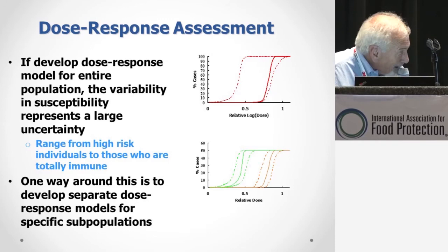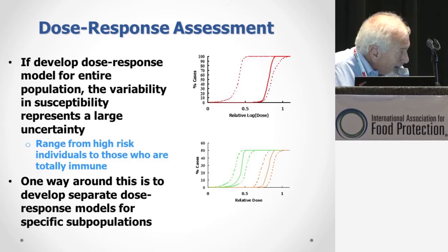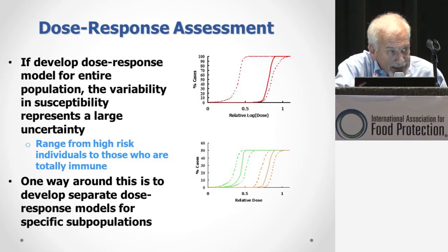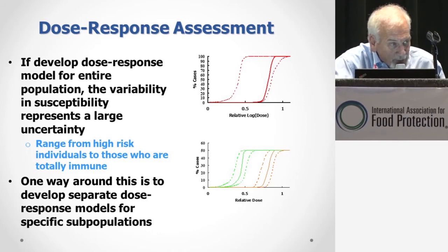If you're dealing with the general population, you get a range of uncertainty that can span orders of magnitude in terms of individuals.